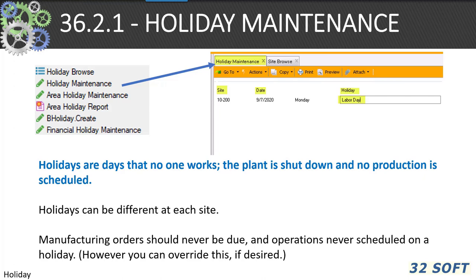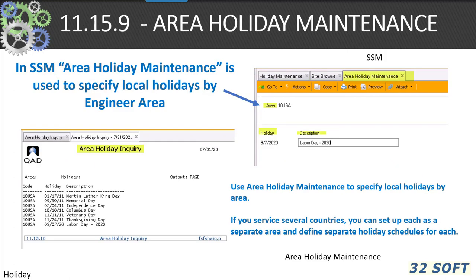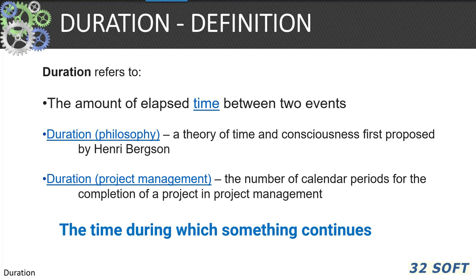You can always override that if desired. If you use service and support to track your products in several sites or countries in the field, you can use the 11.15.9 area holiday maintenance to specify local holidays by area.